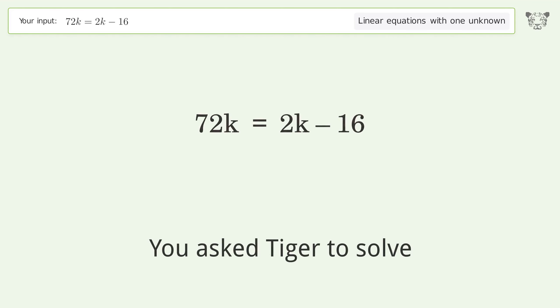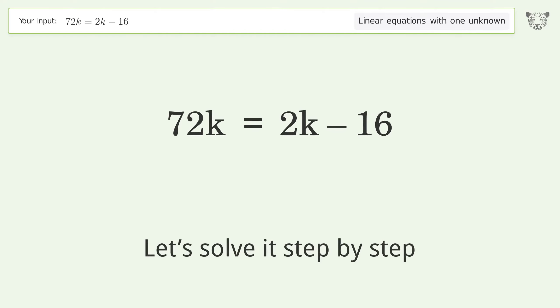You asked Tiger to solve. This deals with linear equations with one unknown. The final result is k equals negative 8 over 35. Let's solve it step by step.